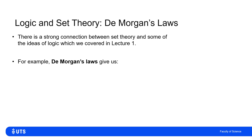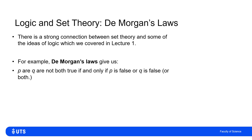Two examples of this are De Morgan's laws. The first is that if P and Q are not both true, that's the case if and only if P is false or Q is false, or potentially both. So NOT (P AND Q) is logically equivalent to (NOT P) OR (NOT Q).